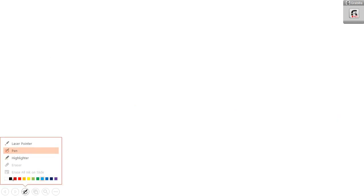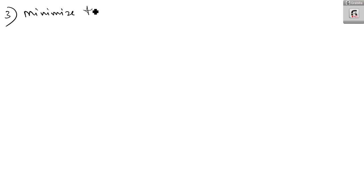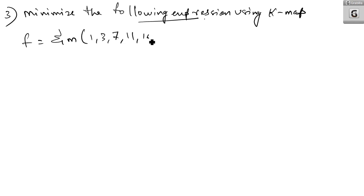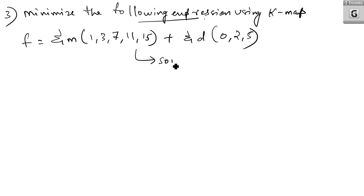Third question: minimize the following expression using KMAP. The expression is F = sigma m(1, 3, 7, 11, 15) + sigma don't care(0, 2, 5). Since the maximum index is 15, we deal with a four-variable KMAP with variables A, B, C, D.